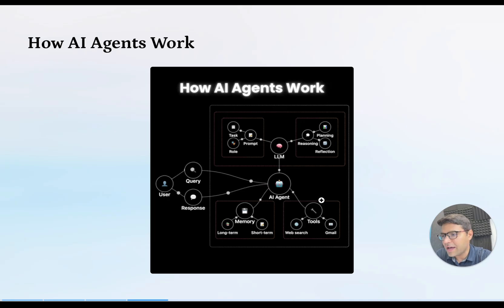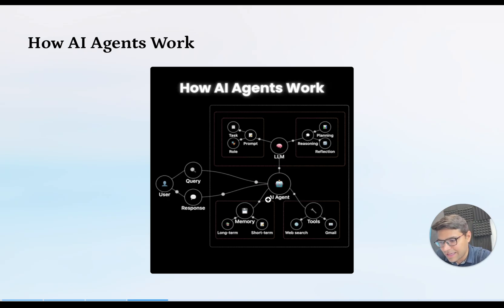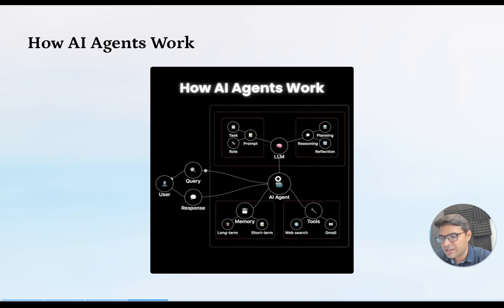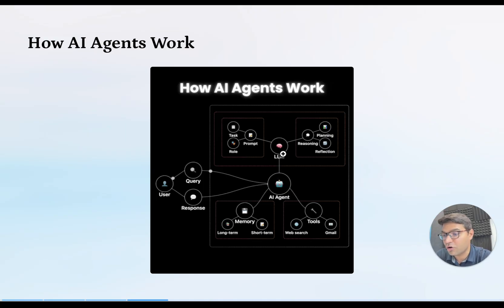Let's learn how AI agents work — their architecture. Imagine you are a user who sends a query to an AI agent. A query is just a question, for example: 'Draft an email for me and send it to Aditya.' When the AI agent receives that query, it sends it to a large language model like ChatGPT, Claude, or Google Gemini. Based on this query, the large language model generates a response. At the same time, your query gets stored in the AI agent's memory so it can remember follow-up questions.